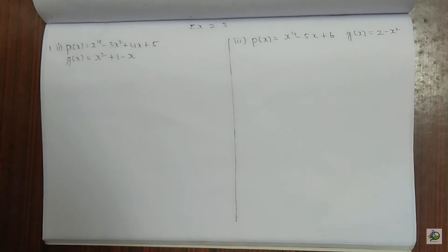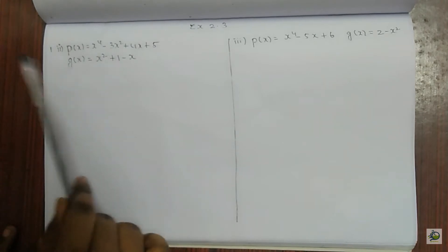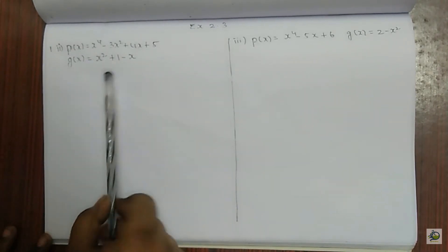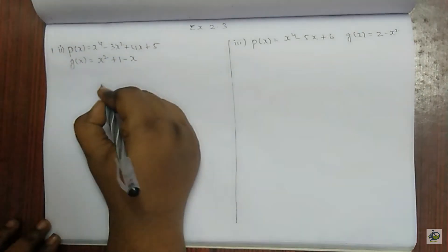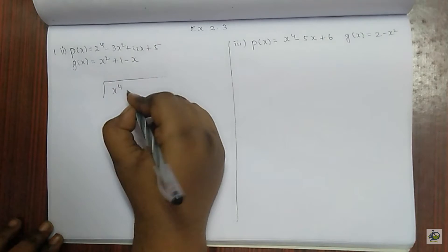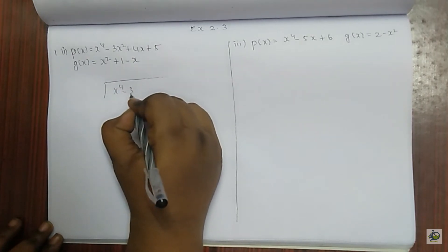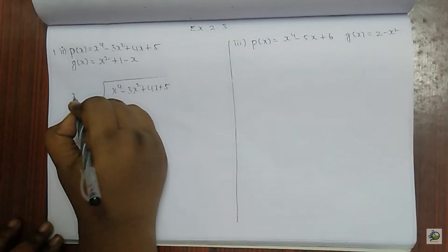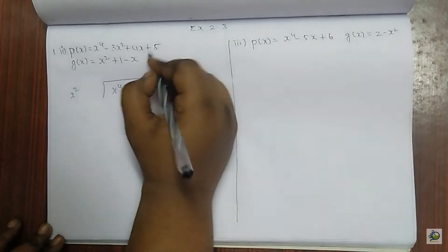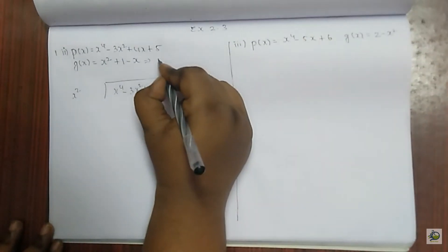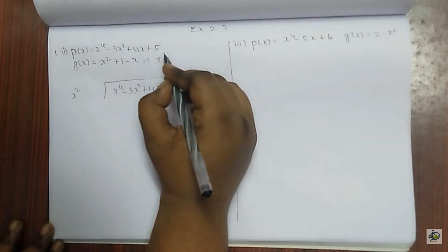Let's move on to exercise 2.3. Here, P of x and G of x are given. We are going to divide and find the quotient and the remainder. P of x will be written inside the bracket, and the divisor is x square. First, we have to arrange the equation according to the power of x.